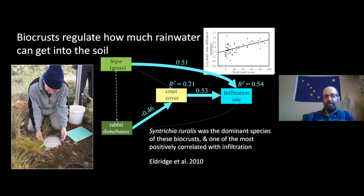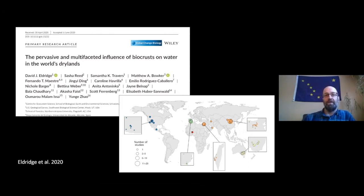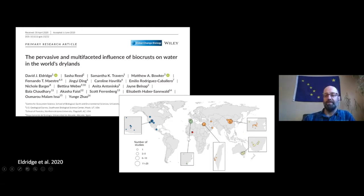But this is just one ecosystem with one kind of crust. To get a broader picture, another thing that recently came out was a meta-analysis — an analysis of all the studies that exist on a topic. A bunch of authors got together and wanted to look at what the different influences of bio crusts on water in dry lands of the world are. We were able to collect studies from North America, Spain, Israel, China, Australia, and a few others.